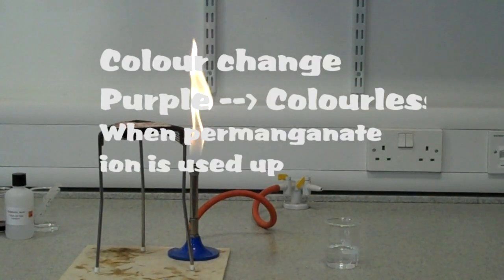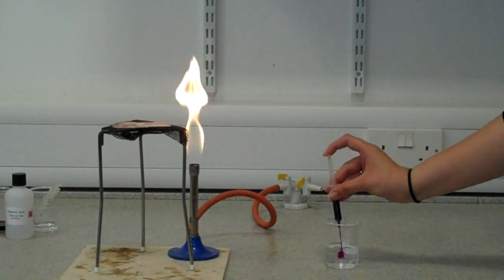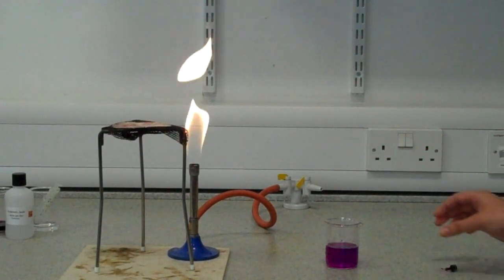In the beaker we have 5cm³ of sulfuric acid and 40cm³ of water. We now add 2cm³ of potassium permanganate and heat the solution to 40 degrees.